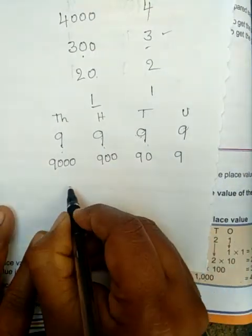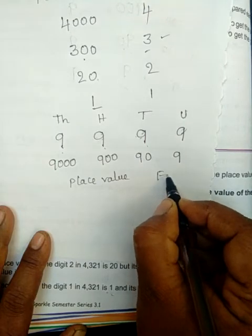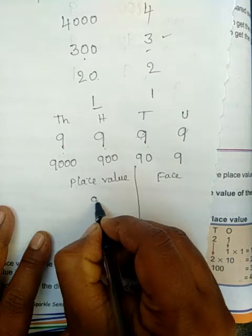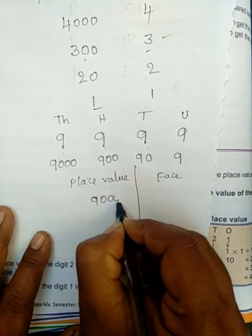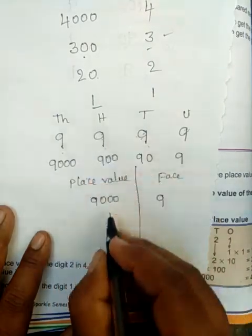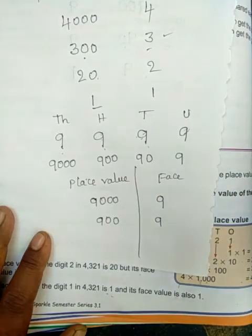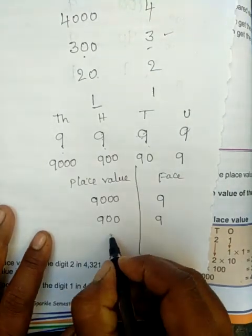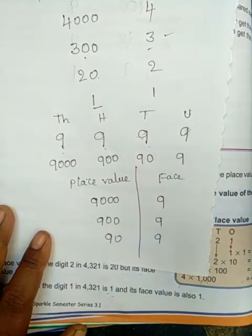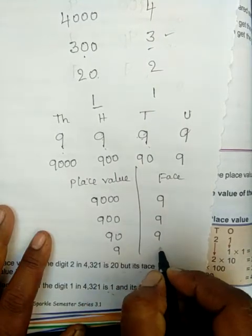Let us discuss the differentiation between place value and face value. 9 is in the thousands place — place value is 9000, but face value is 9 only. 9 in the hundreds place — place value is 900, face value is 9 only. 9 in the tens place — place value is 90, face value is 9. 9 in the ones place — place value is 9, face value is 9.